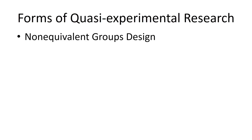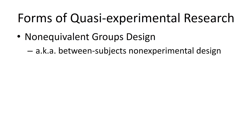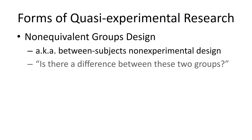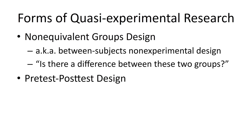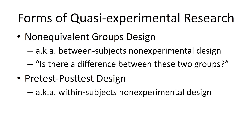There are different forms of quasi-experimental research you could do. You could do what's called the non-equivalent groups design, which is basically just a between-subjects non-experimental design. This would ask a question such as: is there a difference between these two groups — like is there a difference between men and women, for example?